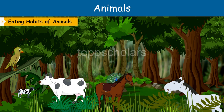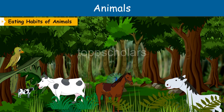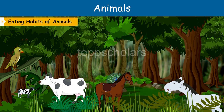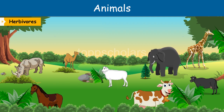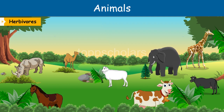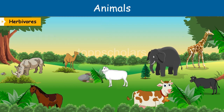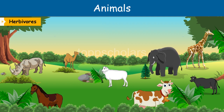Different animals eat different types of food, so they have different types of teeth. Some animals eat plants and plant parts such as leaves, grass, roots, fruits, and tree bark — they are called plant-eating animals or herbivores. They have sharp and broad front teeth for plucking and biting leaves, and their back teeth are strong and flat for chewing food.